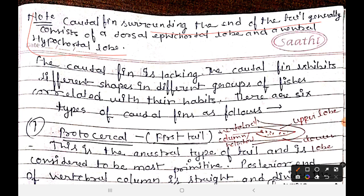The caudal fin is also called the tail region. It consists of two lobes: the dorsal epicaudal lobe and the ventral hypocaudal lobe. The upper lobe is called epicaudal and the lower lobe is called hypocaudal. We will discuss these upper and lower lobes in detail.